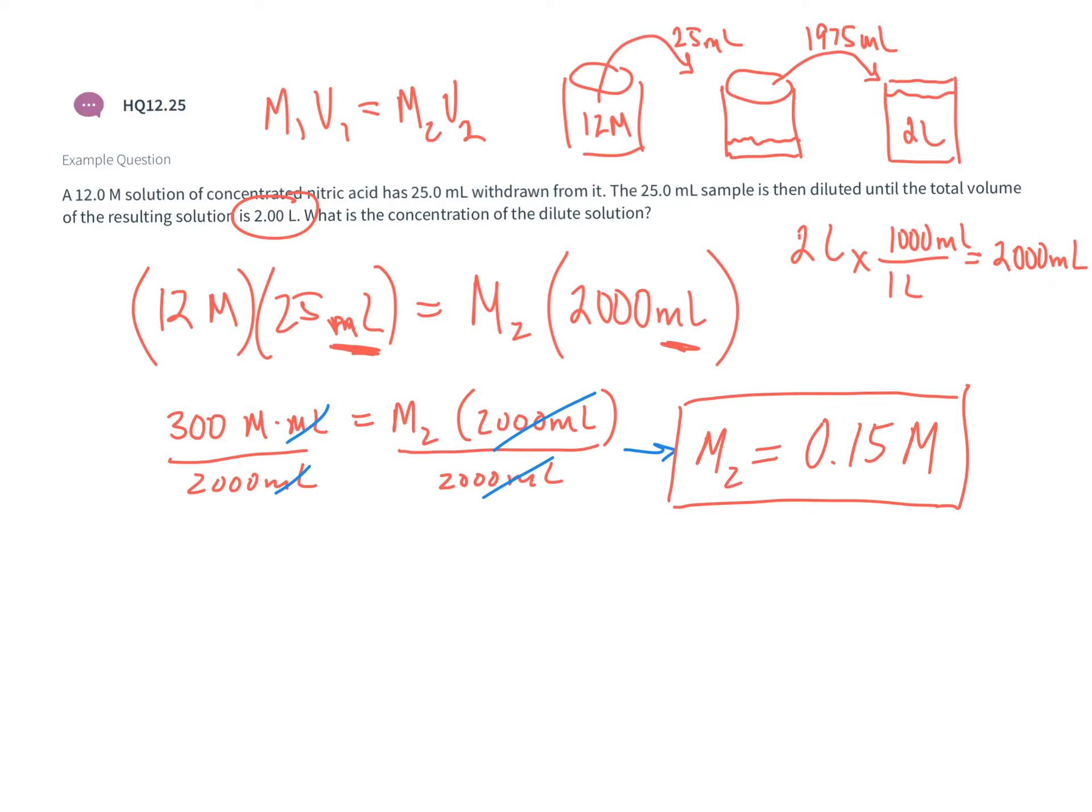M1V1 equals M2V2 is a really handy calculation anytime you're working in lab. Whenever you have to make a stock solution and do a dilution, you'll use M1V1 equals M2V2 to figure out how much of your stock solution you need and what to dilute it to in order to make your desired concentration.